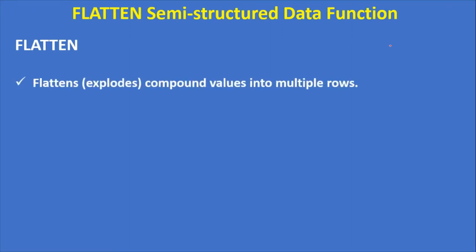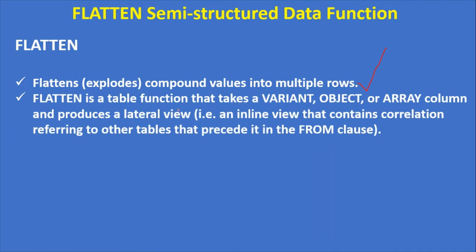Flatten flattens compound values into multiple rows. If you have data in a variant column — JSON data — and you want to convert that data into rows, then you have to use flatten. Flatten is a table function that takes a variant, object, or array column and produces a lateral view. Lateral is nothing but an inline view that contains correlation referring to other tables that precede it in the FROM clause — essentially a correlation query or subquery.